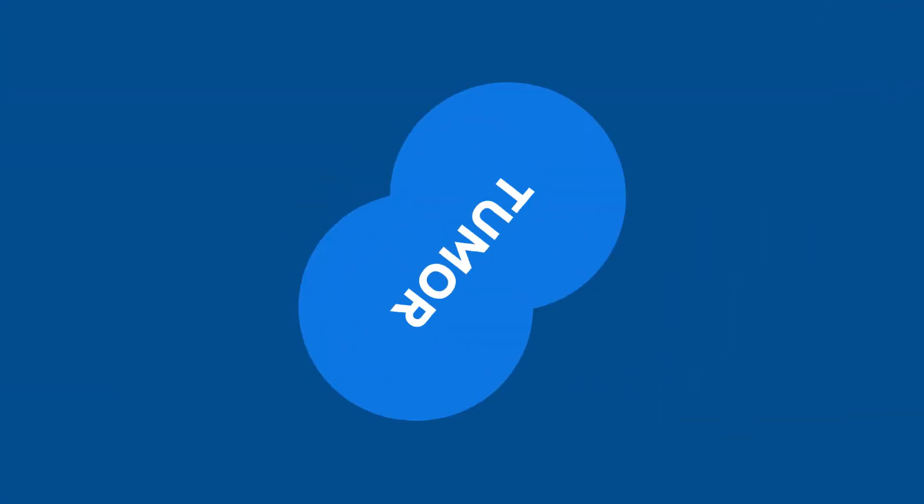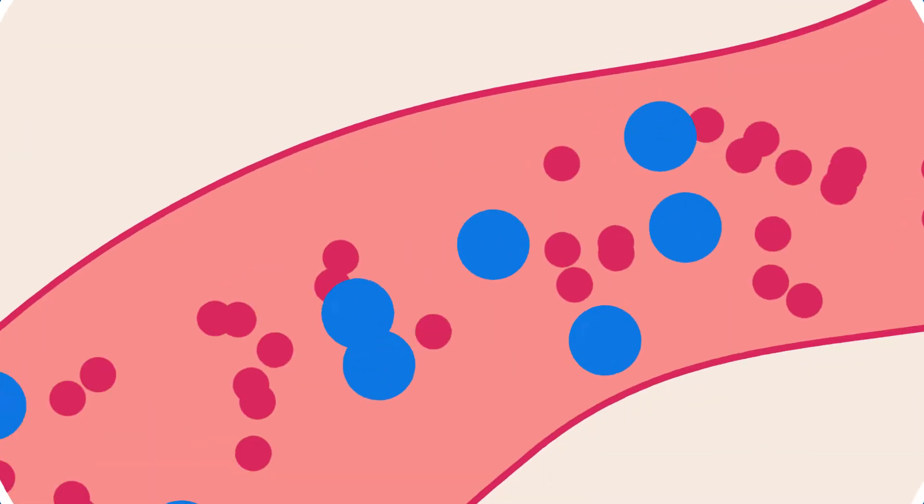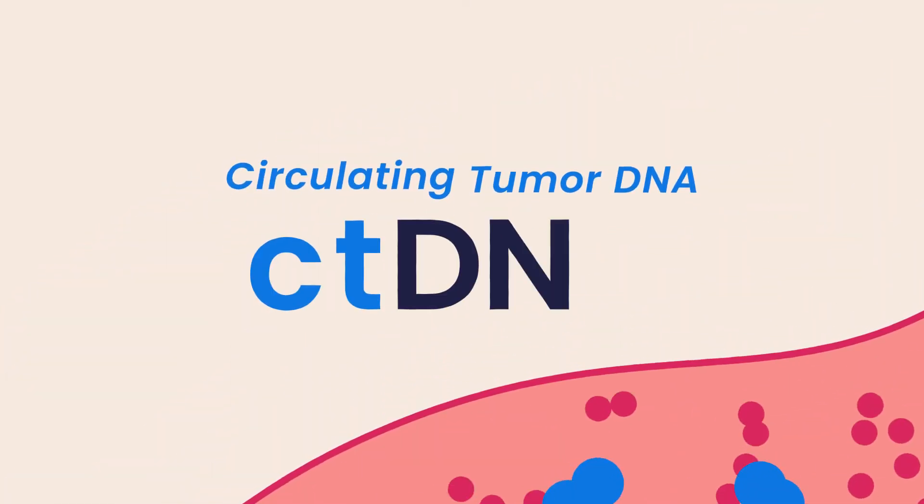Scientists discovered that as tumors change and their cells die, small pieces of their DNA are released into the bloodstream. These fragments are known as circulating tumor DNA, or ctDNA.